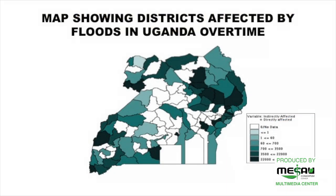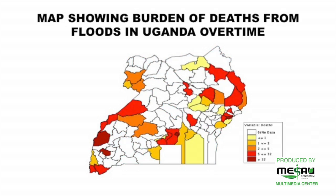Here we see a map showing the districts affected countrywide by floods over time, using aggregated data for a period of about 85 years, back to about 1933. This map shows the number of deaths caused as a result of floods over time.